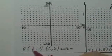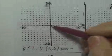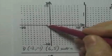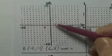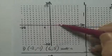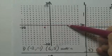So let's graph the two points. Negative two, negative one. You start at the origin, negative two, negative one. The other one is six, five. You go over six: one, two, three, four, five, six, up five.